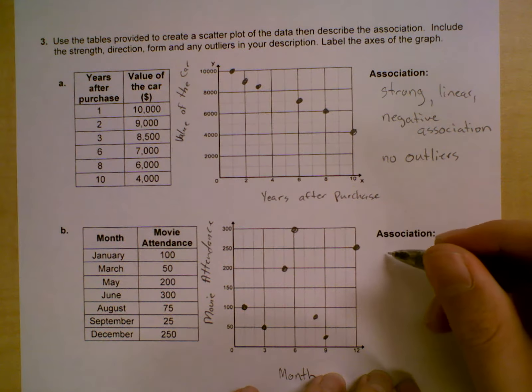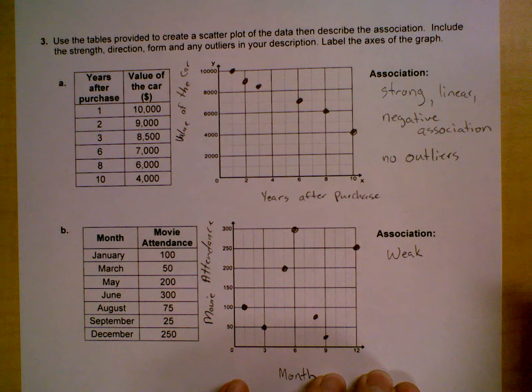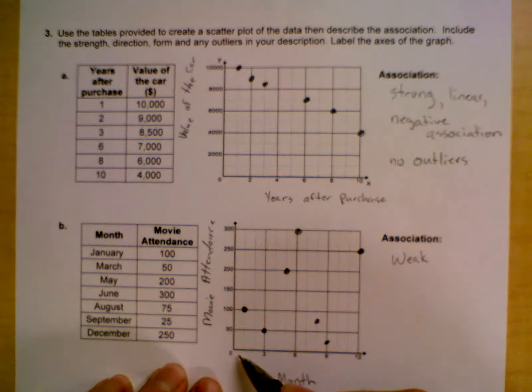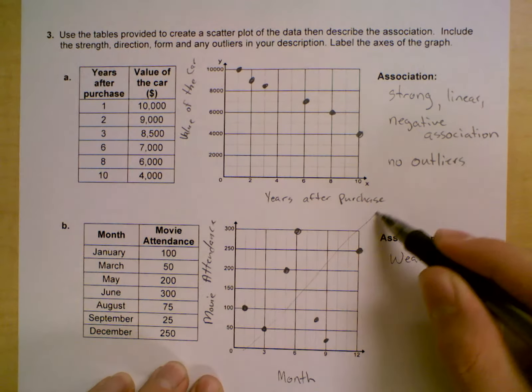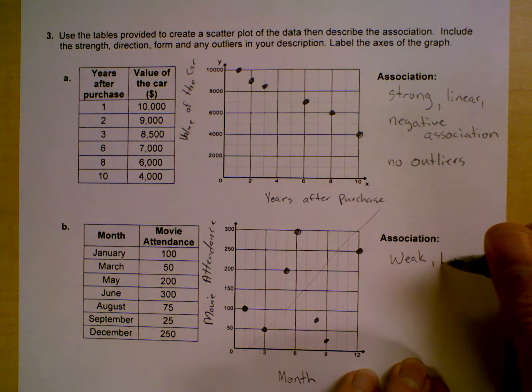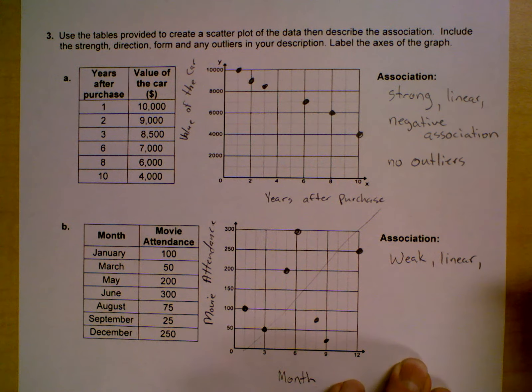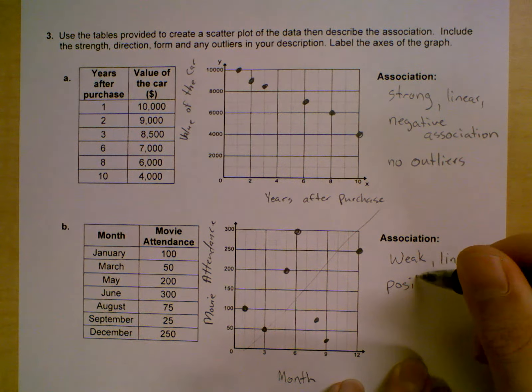I'm going to say that the association is weak because if I do give a line of best fit, it does look like it trends to go up. I would say it has a linear association and then positive as well.